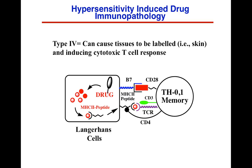Type 4 can cause tissues to be labeled, inducing cytotoxic T cell responses in which Langerhans cells undergo antigen processing and present to TH0 and TH1 cells, also generating memory cells. This causes these tissues to be labeled, induces the inflammatory response, and causes inflammatory spots at that site.